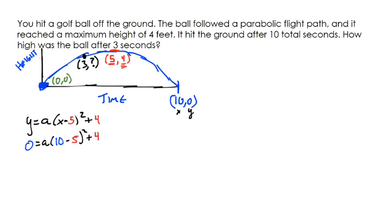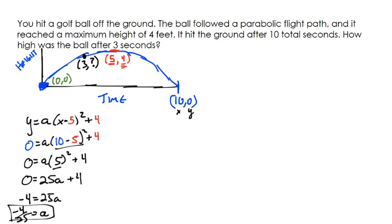By substituting that zero we have 0 = a(10 - 5)² + 4. Let's solve for our a value because once we have that a value we'll have everything we need. I have 0 = a(5)² + 4. Five squared is 25, so 0 = 25a + 4. I'm going to subtract four on each side and divide by 25. We have this a value of negative 4/25.